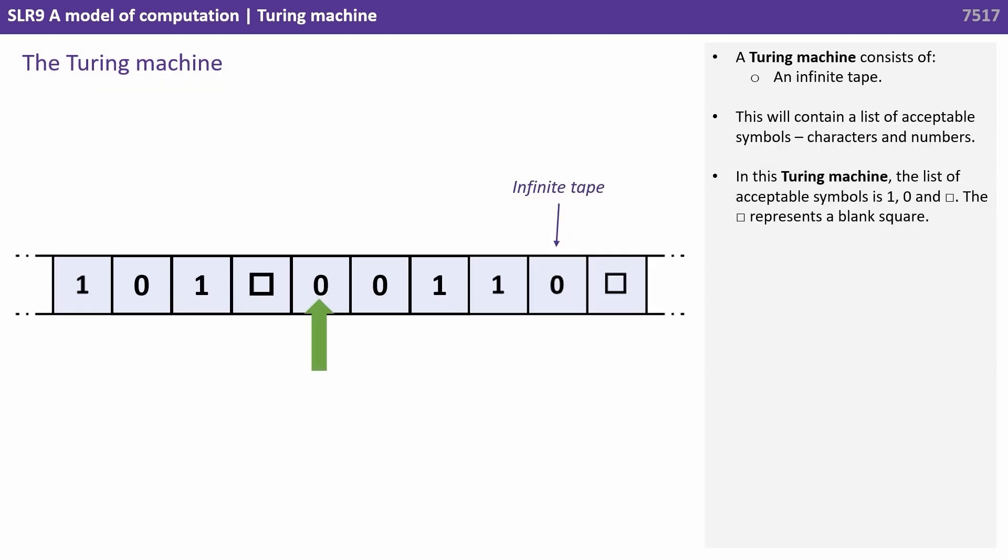A Turing machine consists of an infinite tape. This will contain a list of acceptable symbols, characters and numbers. In this Turing machine the list of acceptable symbols is 1, 0, and a square, and the square represents a blank square.